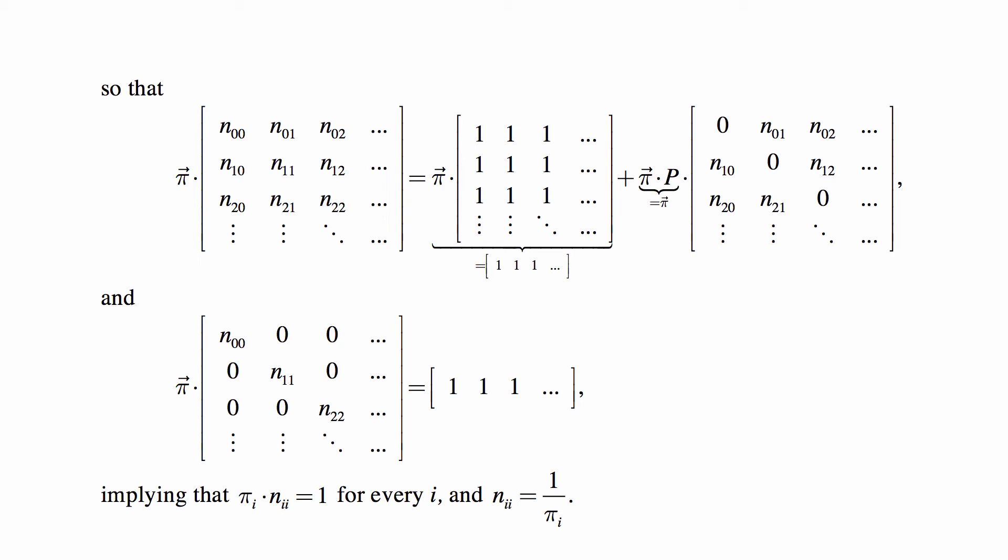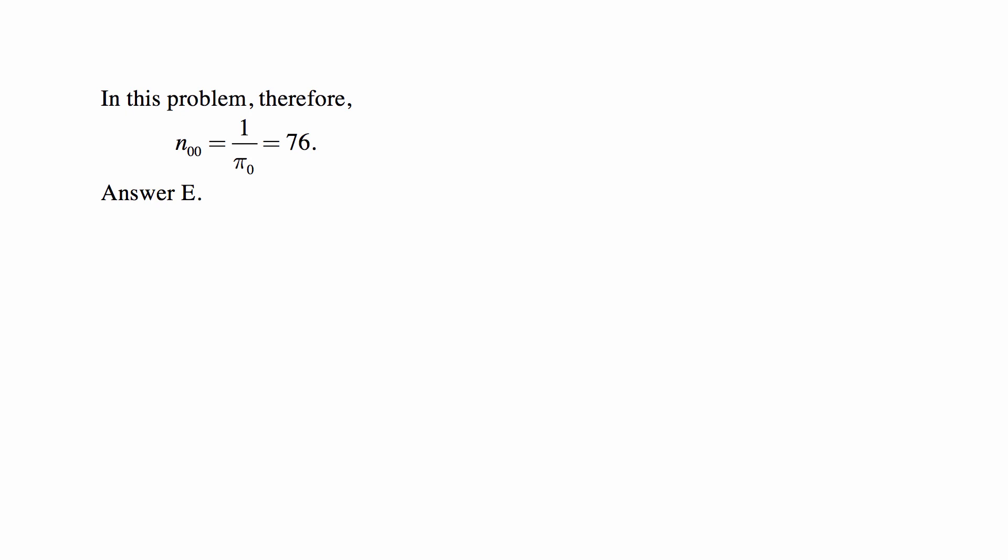So that's the crucial message of all this. All this work is to show that under the conditions under which limiting probabilities exist, stationary probabilities exist, the expected time to return to a given state is simply 1 over the stationary probability of being in that state. And in this problem, N₀₀ is 1 over π₀, so 1 over 1/76, so this is 76, answer E.